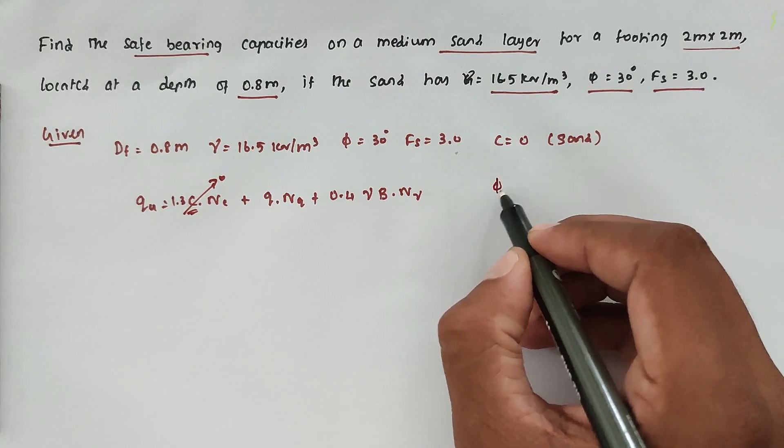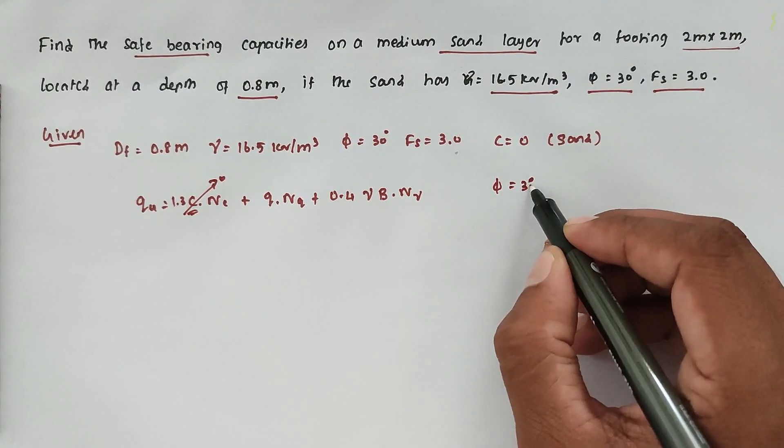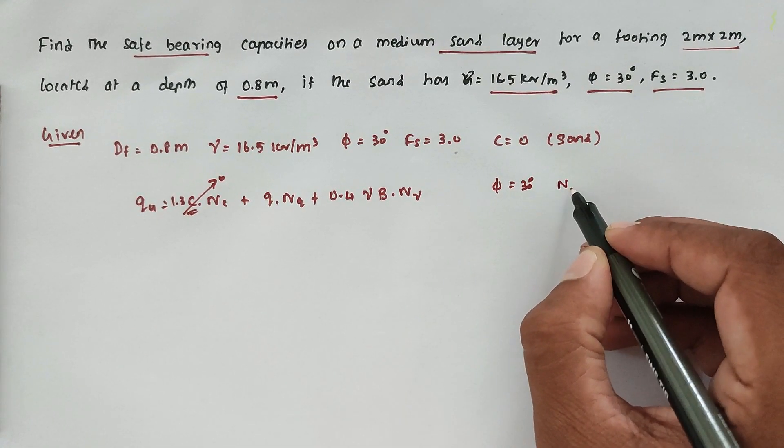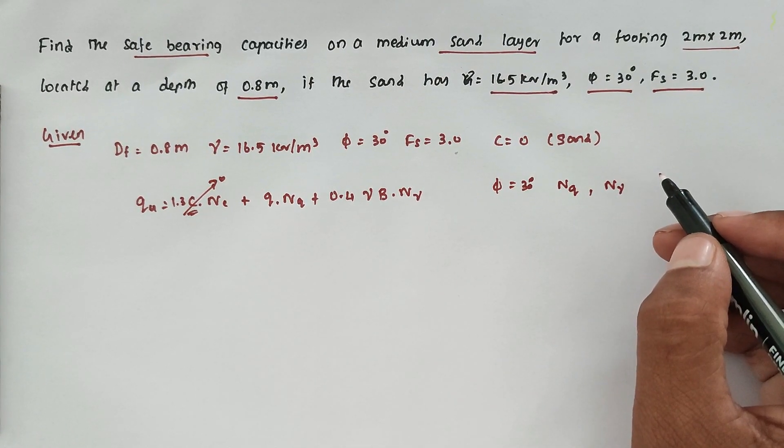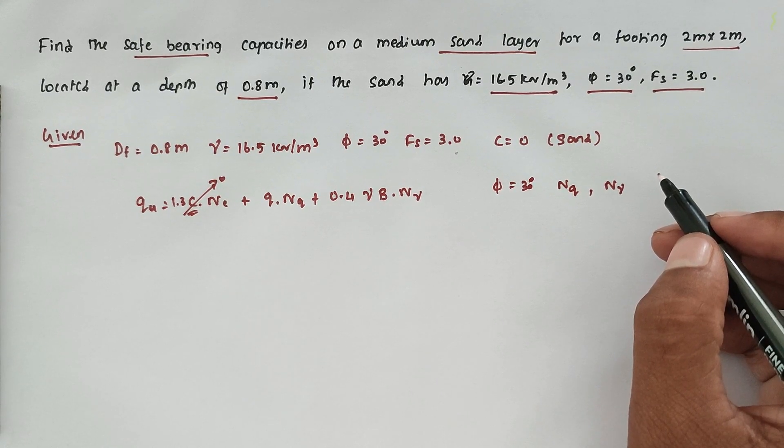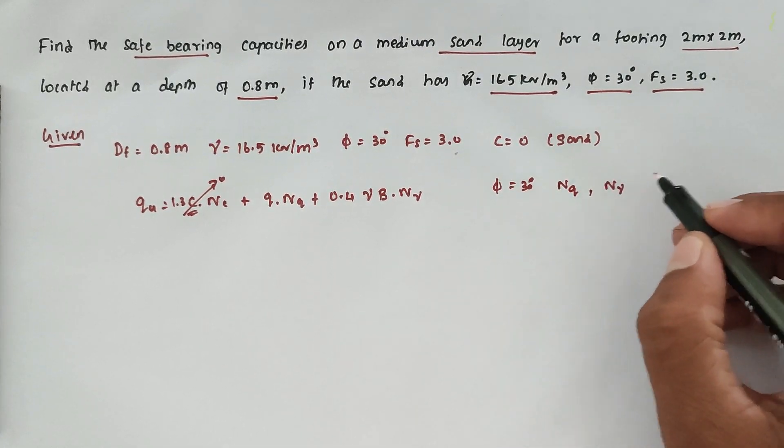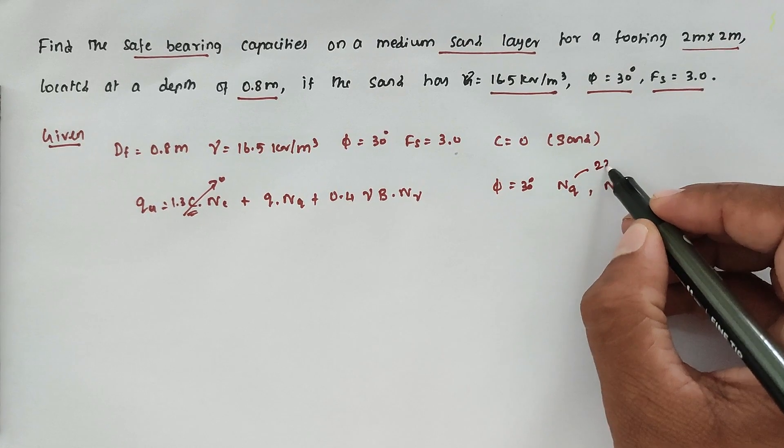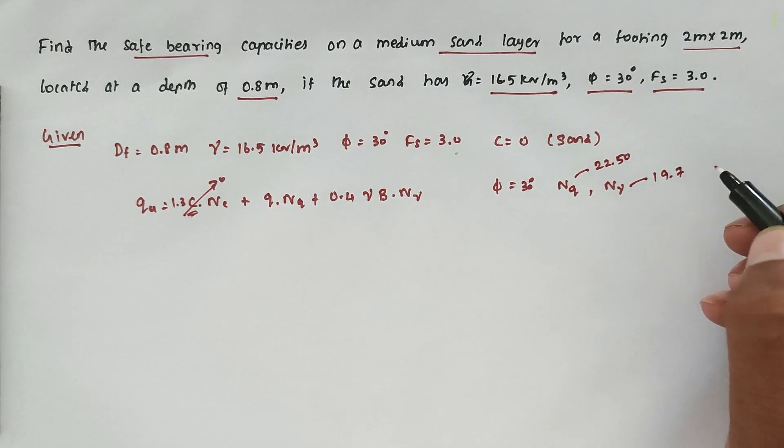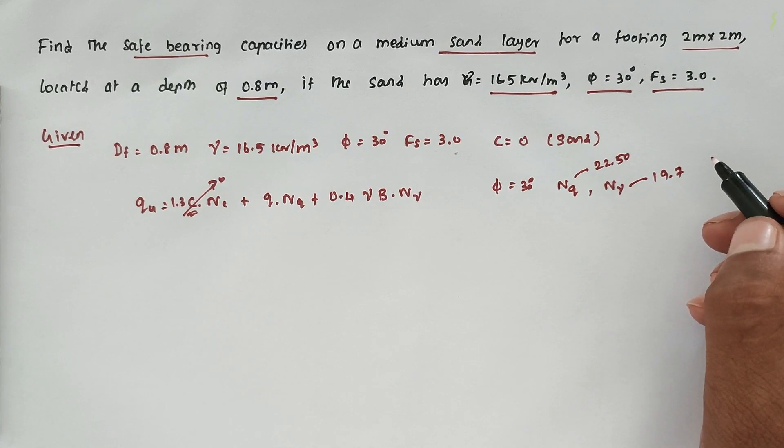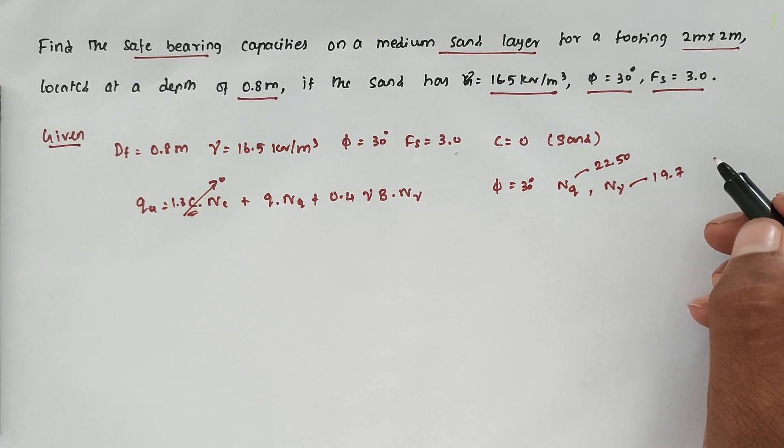So corresponding to φ = 30°, now Nq value and Nγ value we have to take from the Terzaghi bearing capacity table. We can substitute all the values and get the answer.